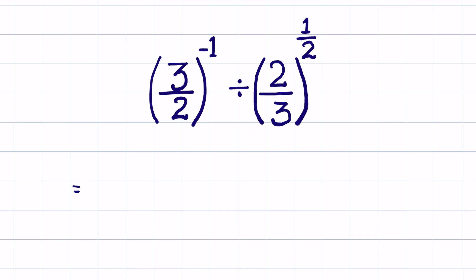So first of all, this negative exponent — what does this mean? Negative exponent means that we have to write the reciprocal of that number with the positive power of the exponent. So if a is raised to the power of minus 1, we write it as 1 upon a raised to the power of 1. If a is raised to the power of minus 2, we write 1 upon a raised to the power of 2. So negative exponent means positive exponent but the number becomes reciprocal.